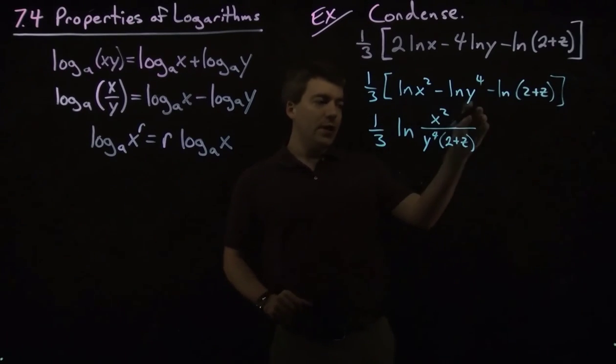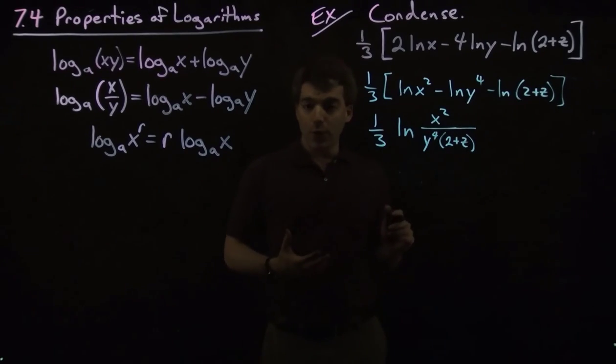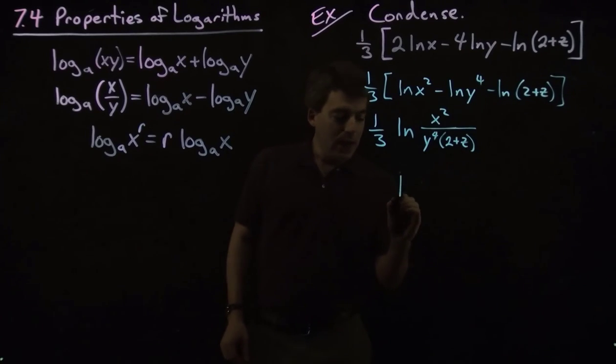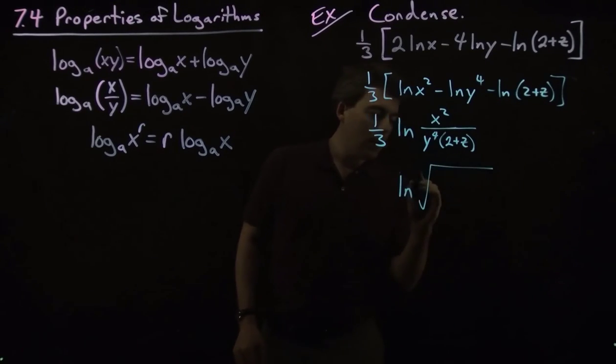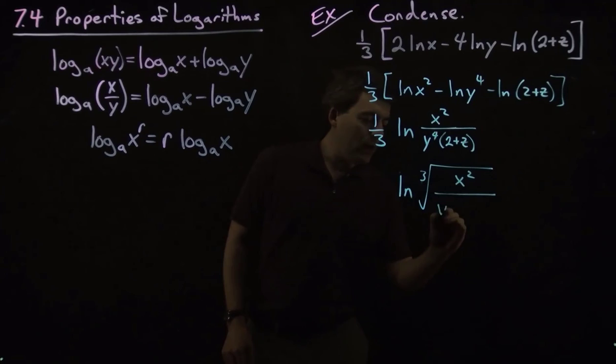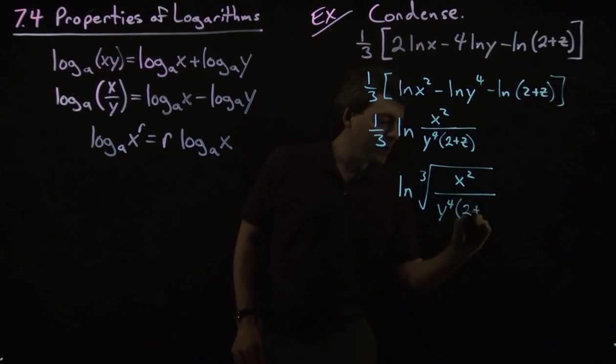And we know that one-third as an exponent is a cube root. So what we have at the end here is the cube root of all of this: x squared over y to the fourth times 2 plus z.